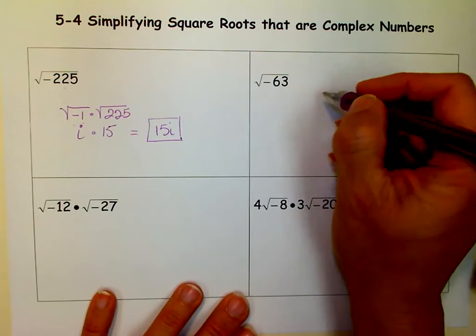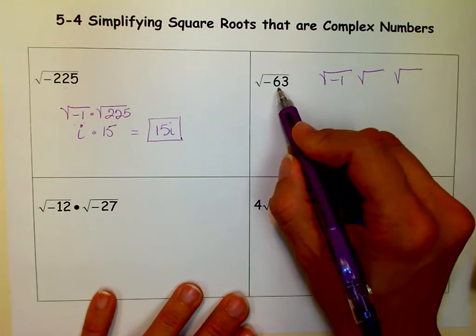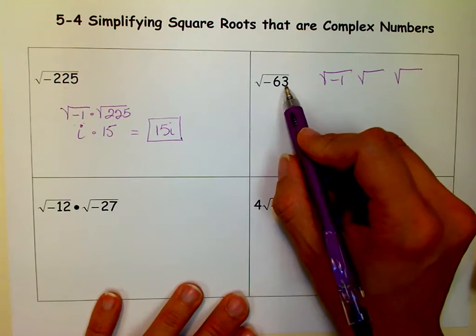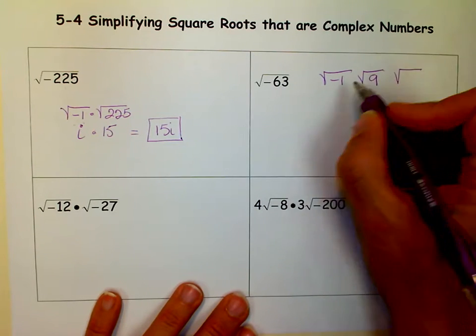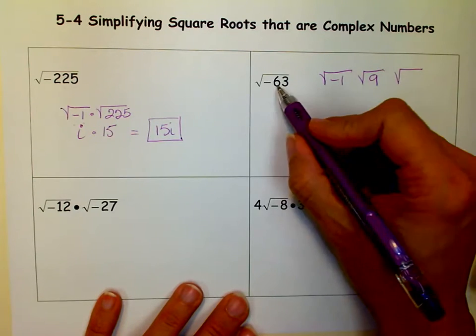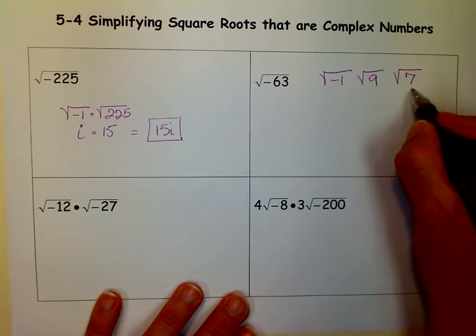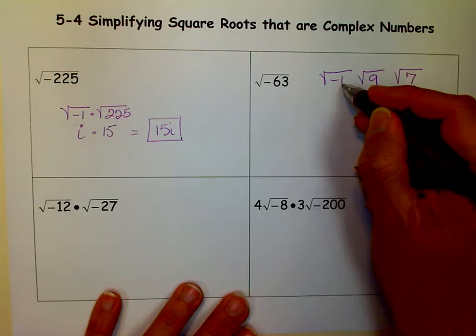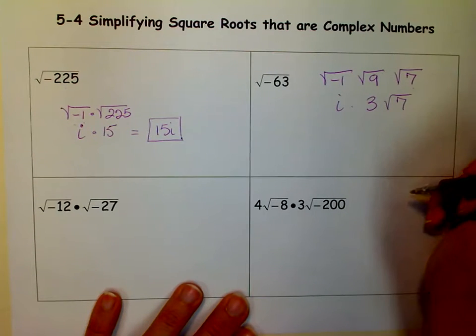Now over here, again, we're going to split it up into a negative 1. But then we're going to split it up into some factors of 63. I always look for perfect factors. I know 9 goes into that because they add up to 9. And 9 times 7. And 7 is a prime number, so I know that there aren't going to be any factors here. But 9, the square root of 9 is 3. The square root of negative 1 is i. And then I have that square root of 7.